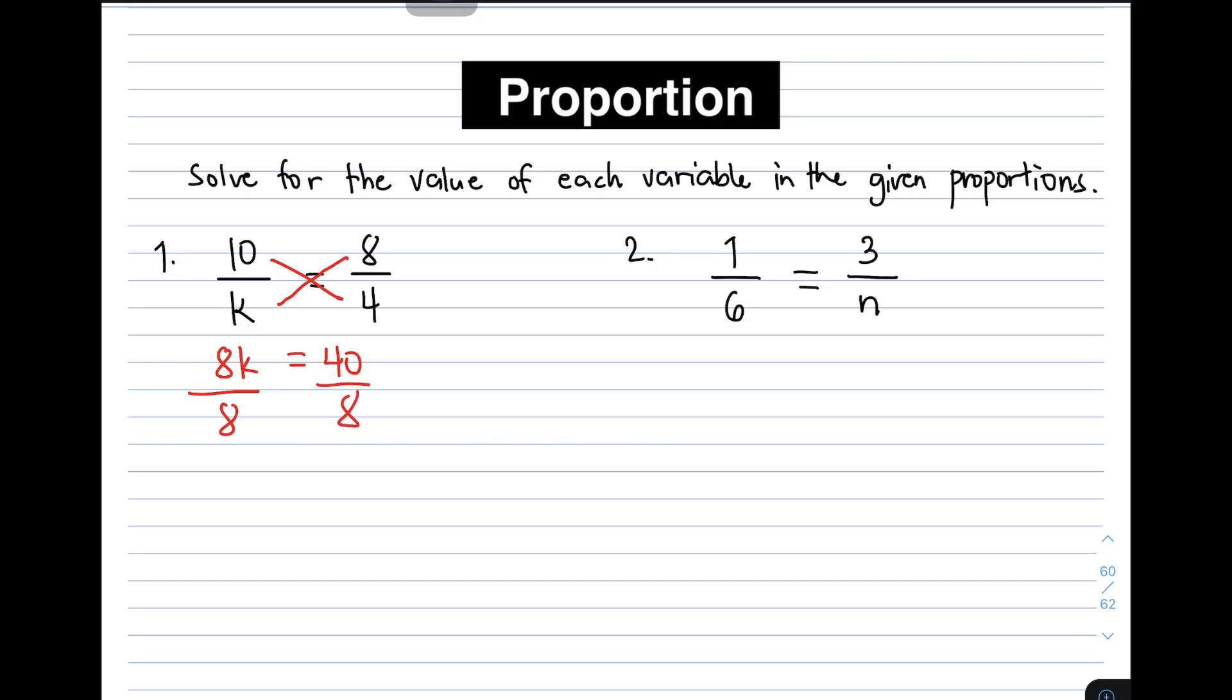So dividing 8 by 8, it will give you 1. So in other words, you can cancel out 8. And then the remaining one is k. As you can see, it is already isolated.